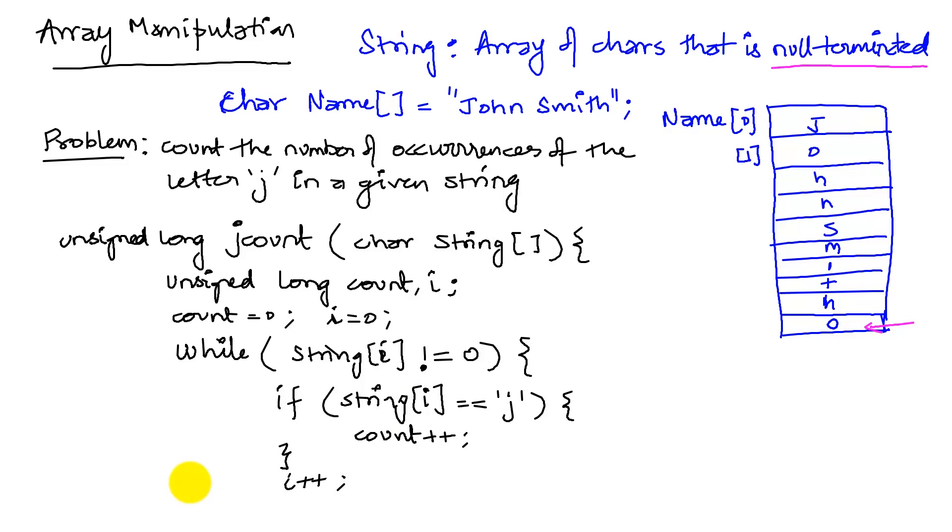Then I go back into my while loop and I look at the next item and the next character. If it's not equal, if I haven't reached the end, then I check for it being j. If it's a j, I increment the count. Otherwise I don't and I keep repeating this.